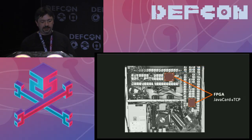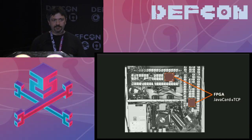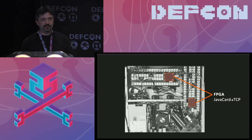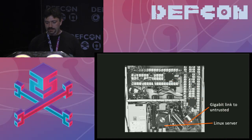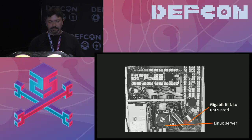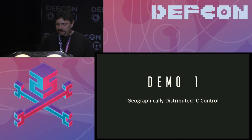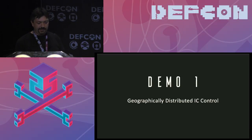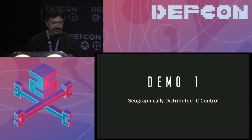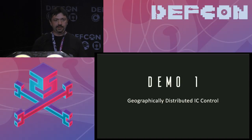The FPGA connects Java cards using a serial protocol to talk to smart cards and convert to TCP packets. There's an internal network hub and a main Linux server that runs an untrusted REST server allowing connectivity to outside. We have three demonstrations. The first shows geographically distributed control of integrated circuits.